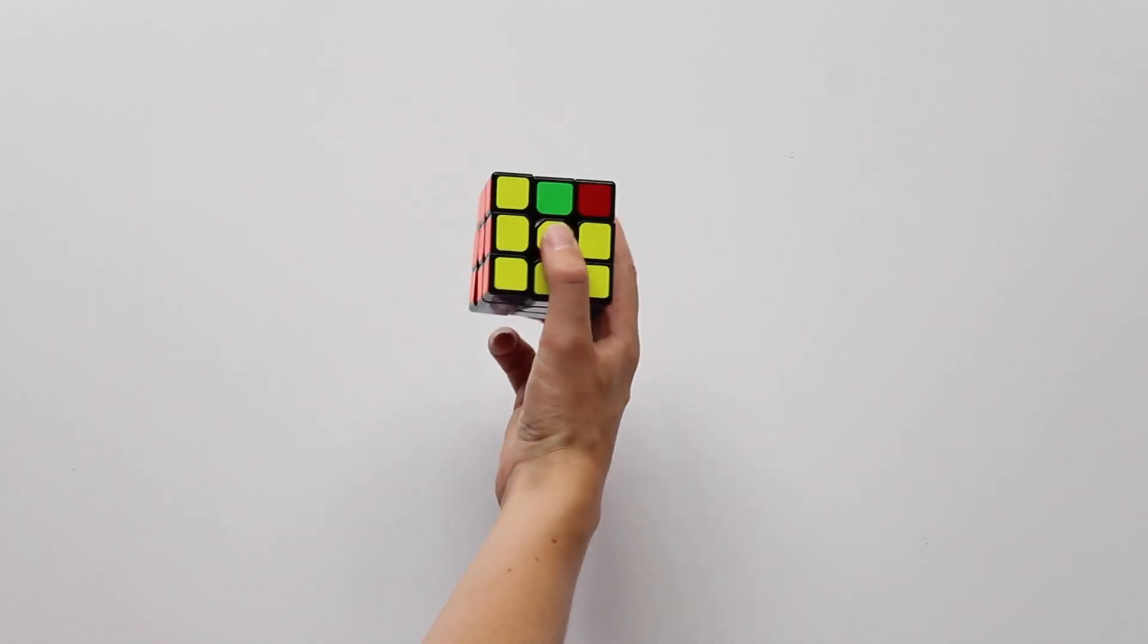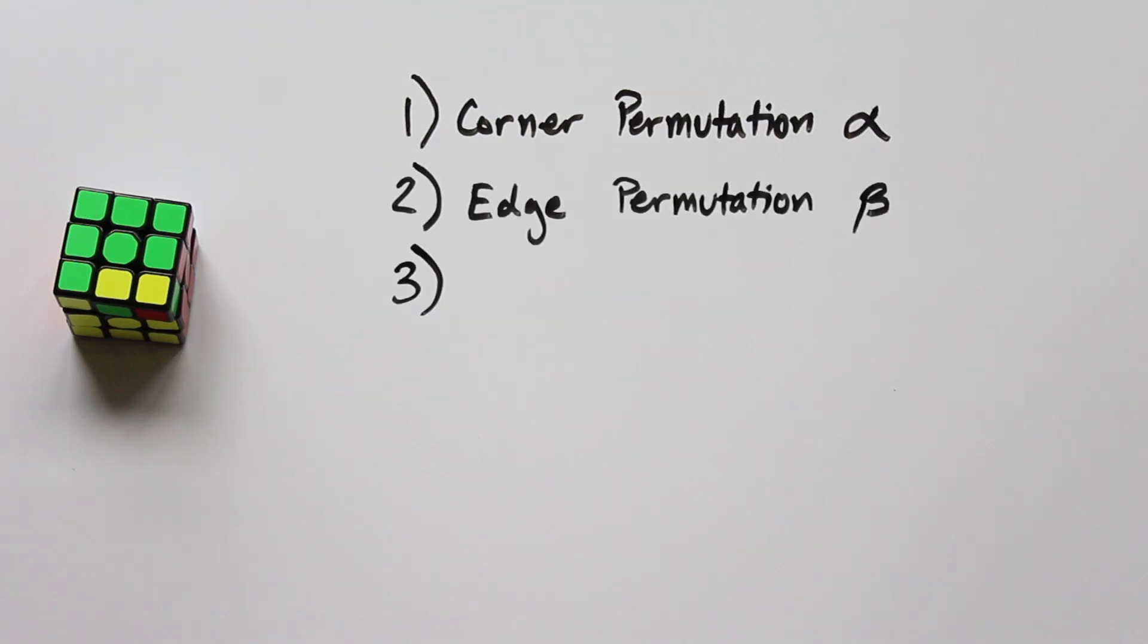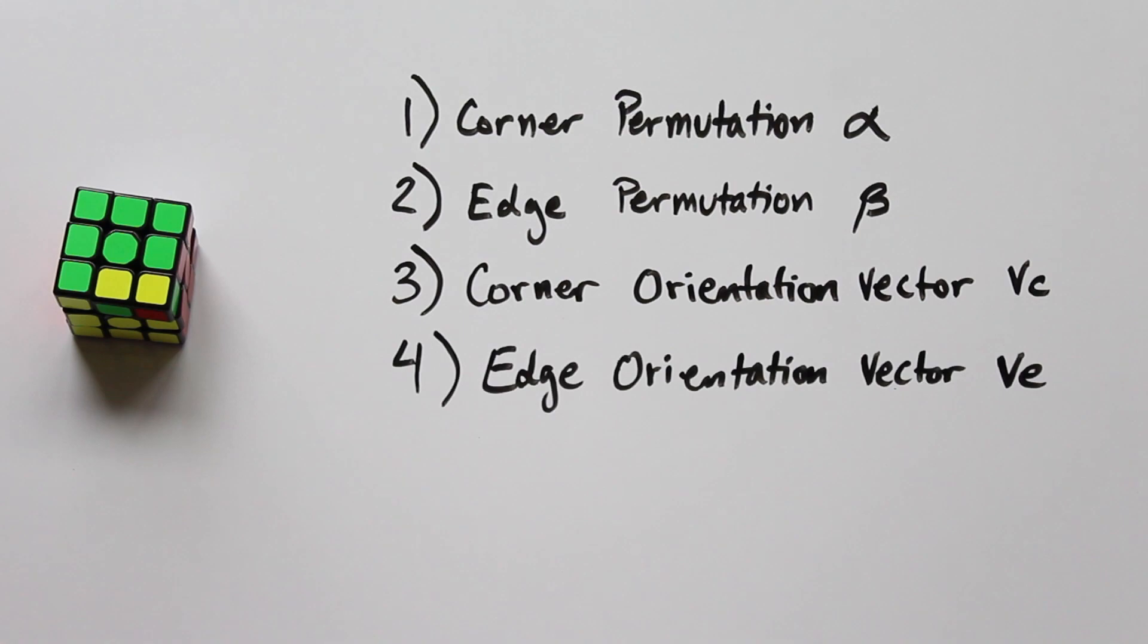Last time we were able to develop an accurate model of the Rubik's Cube using four pieces of information: a permutation of the corners, a permutation of the edges, an orientation vector for the corners, and an orientation vector for the edges.